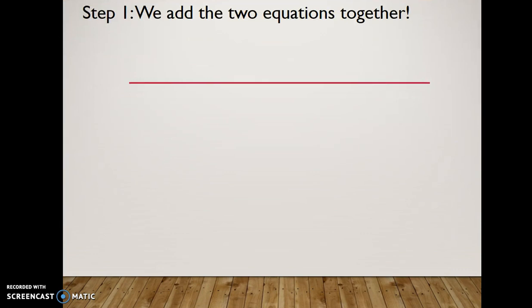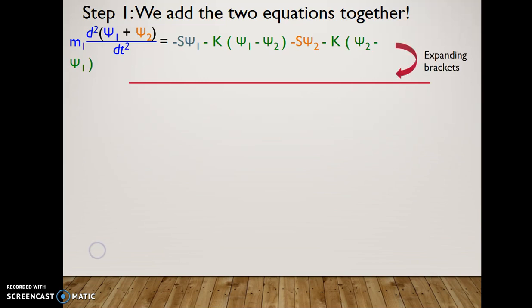There are now the steps to find the solution. Step 1, we add the two initial equations 1 and 2 together. We consider the left-hand side first. Inside the double differential, we have the added displacements. On the right-hand side, we have added all the components together, and we realize that after expanding the brackets, the middle spring components in green all cancel out, and leave us with only the edge spring components in orange.